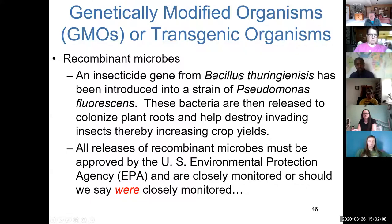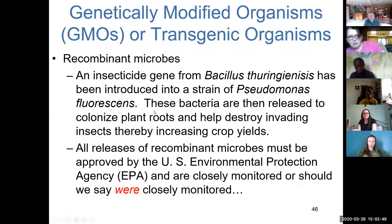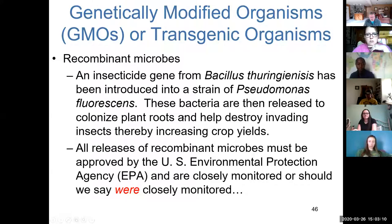Scientists were able to discover in Bacillus thuringiensis a gene that acts as an insecticide gene — it counters the effects of insects. They introduced it by genetically modifying another strain, Pseudomonas fluorescens, and then released that bacterium to plants. The roots of the plants took that up and therefore acquired the insecticide gene, becoming more resistant to insect issues, and the crop yields increased. This is an example of how genetic manipulation can result in increased crop yield.